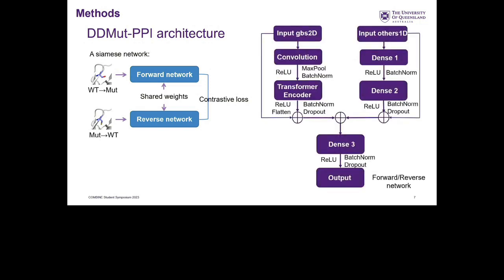In the detailed architecture for each sub-component, the graph-based signatures are processed by convolutional layers and transformer encoders. All other features are processed by two dense layers. These are then concatenated together, followed by additional dense layers and the output layer.